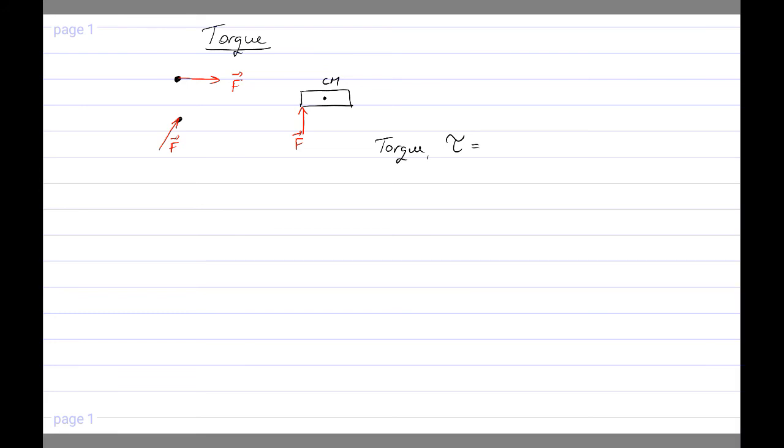So it is a cross product between what we call the lever arm and the force. In magnitude, the cross product is magnitude of R magnitude of F times the sine of the angle between those two vectors.